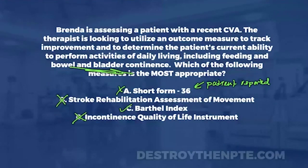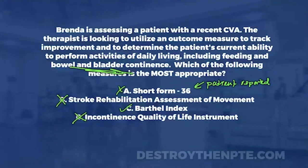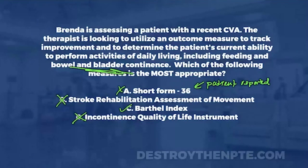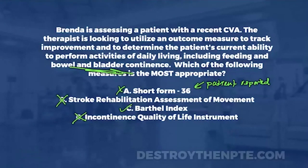If you want to excel in the area of outcome measures on the NPTE, you have to understand the top outcome measures and what they specifically do. If you're on the podcast right now, check your show notes — there's going to be a link to a cheat sheet covering the top 10 outcome measures I expect to come up on the NPTE. Click the link and go get it.